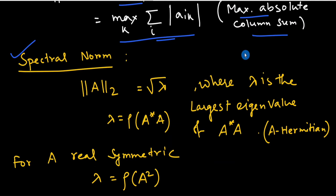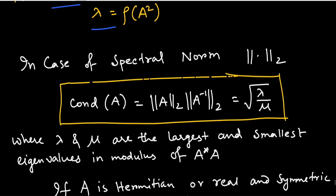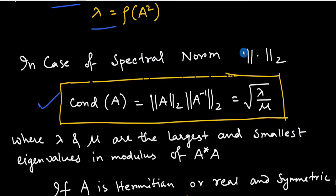We define the spectral norm as: norm₂(A) = √λ, where λ is the largest eigenvalue of A*A, and A* is the conjugate transpose of the complex matrix A. We define this as ρ(A*A). For a real symmetric matrix, λ = ρ(A²).